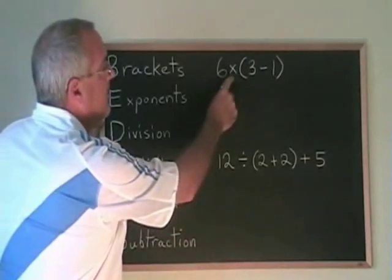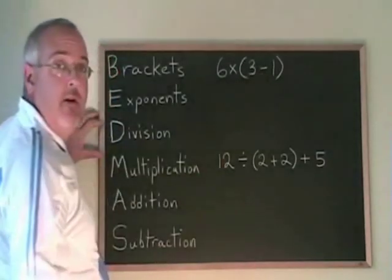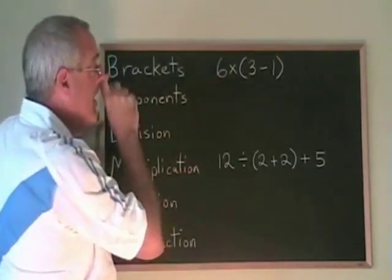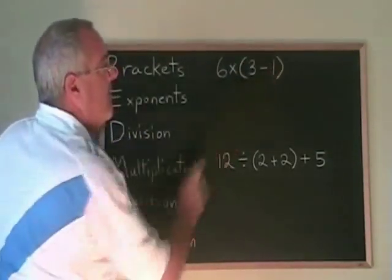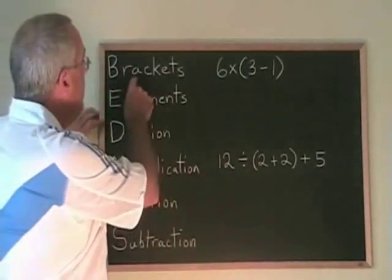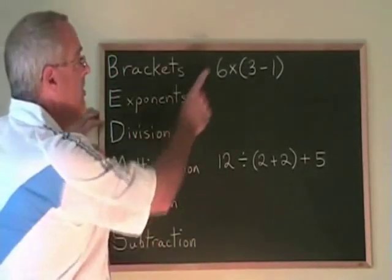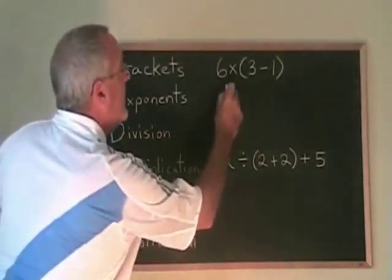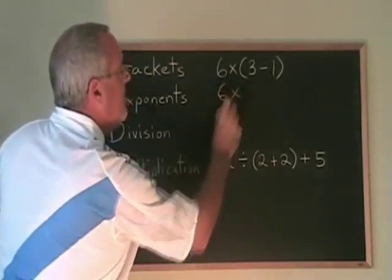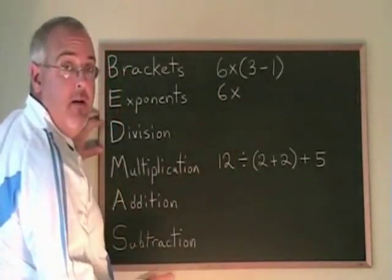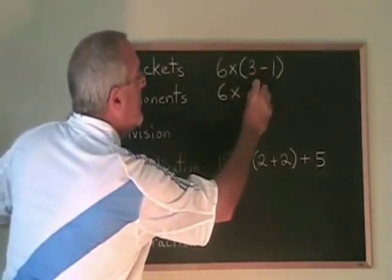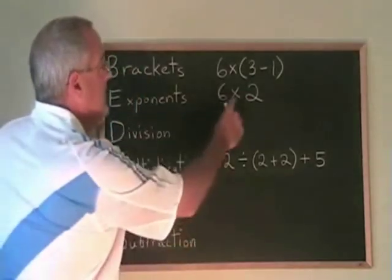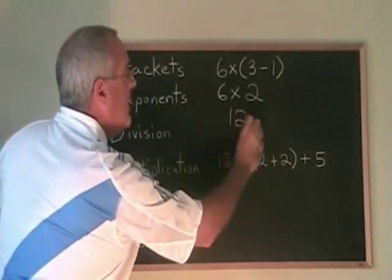Here we have a multiplication and a subtraction. Normally, we would have to do the multiplication first. But because there's a bracket around the 3 minus 1 and bracket comes ahead of multiplication in BEDMAS, we're doing the bracket first. We're going to do 3 minus 1 first. So the 6 times gets copied down, and the answer to 3 minus 1, which is 2, gets written here in place of the bracket. Now 6 times 2 is 12. We have our answer.